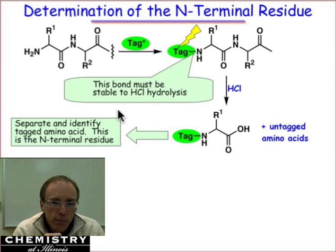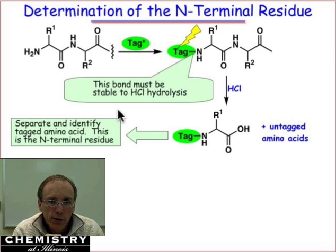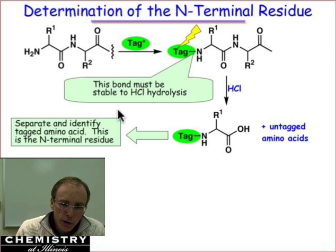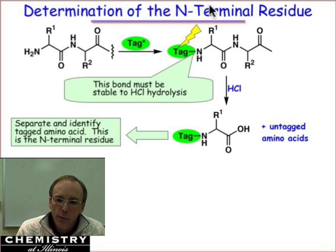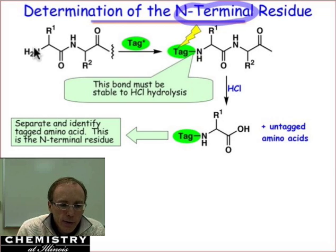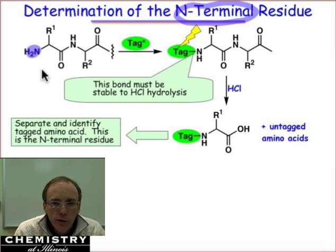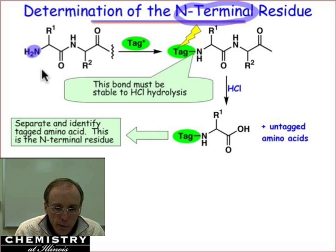Once the amino acid composition of a polypeptide is known, the next question is to determine its sequence. The easiest question to address is: what's the N-terminal residue? This is easy because it takes advantage of the nucleophilic character of the amino group at the one end of the polypeptide chain.